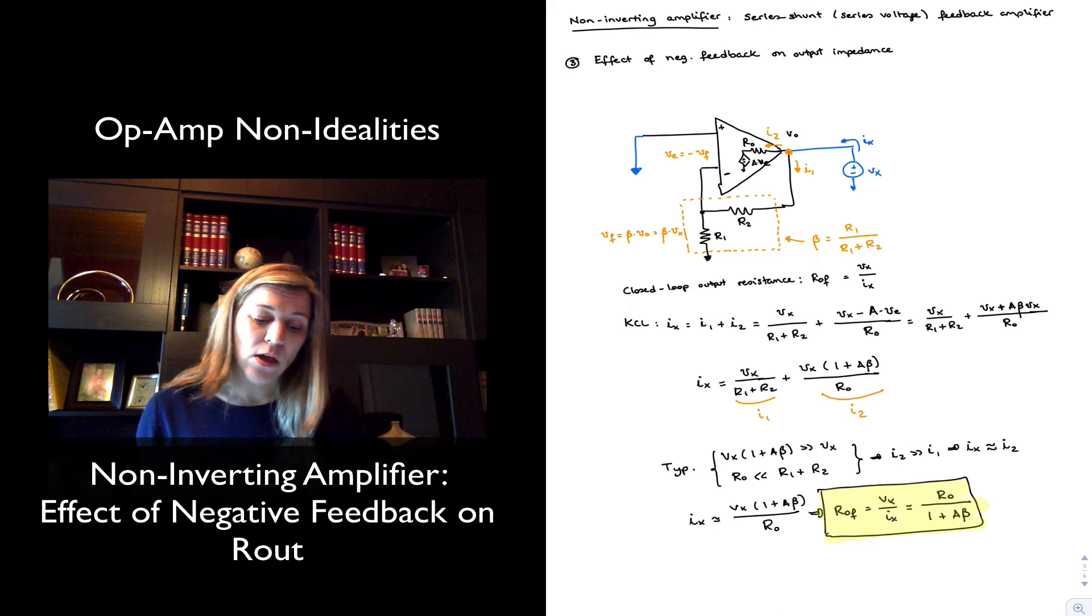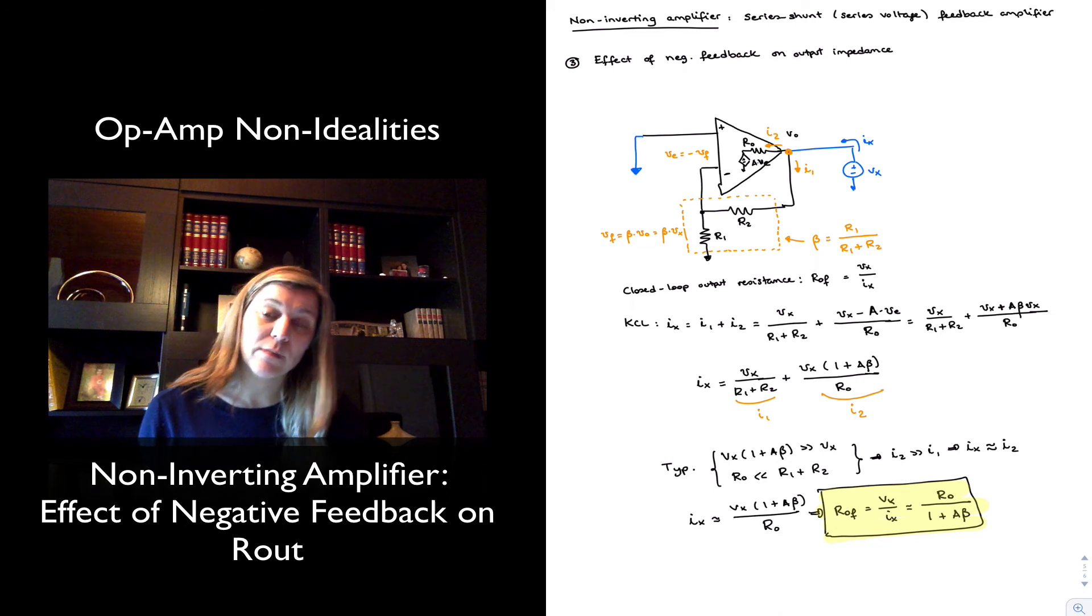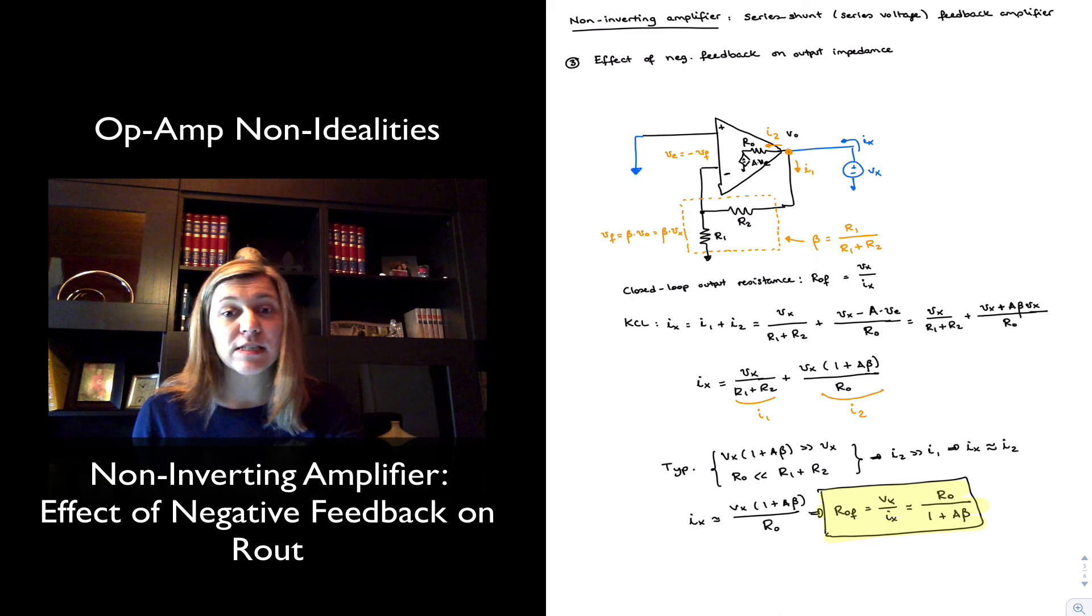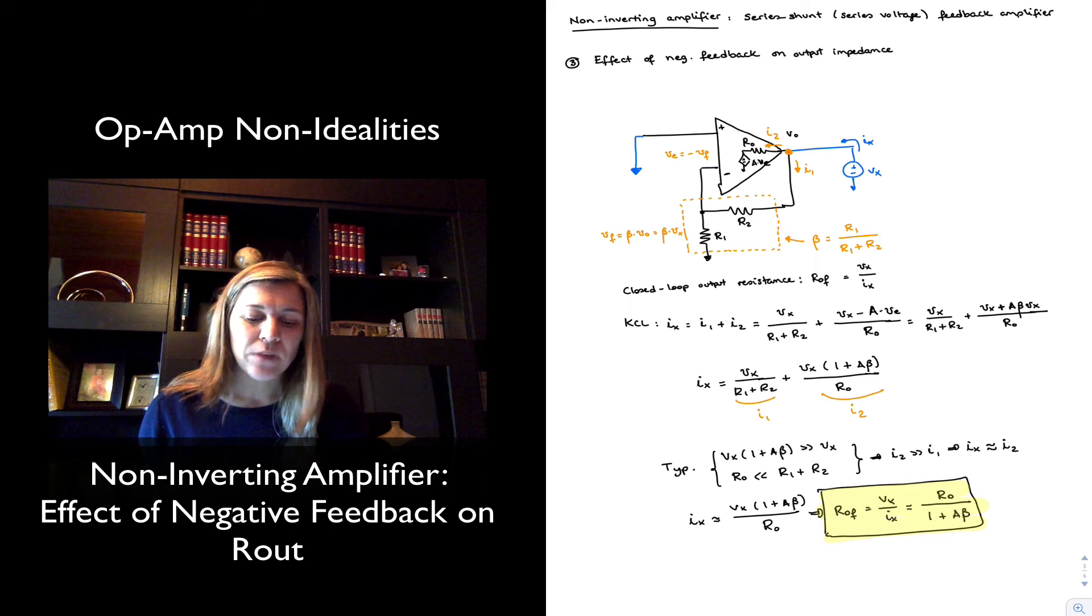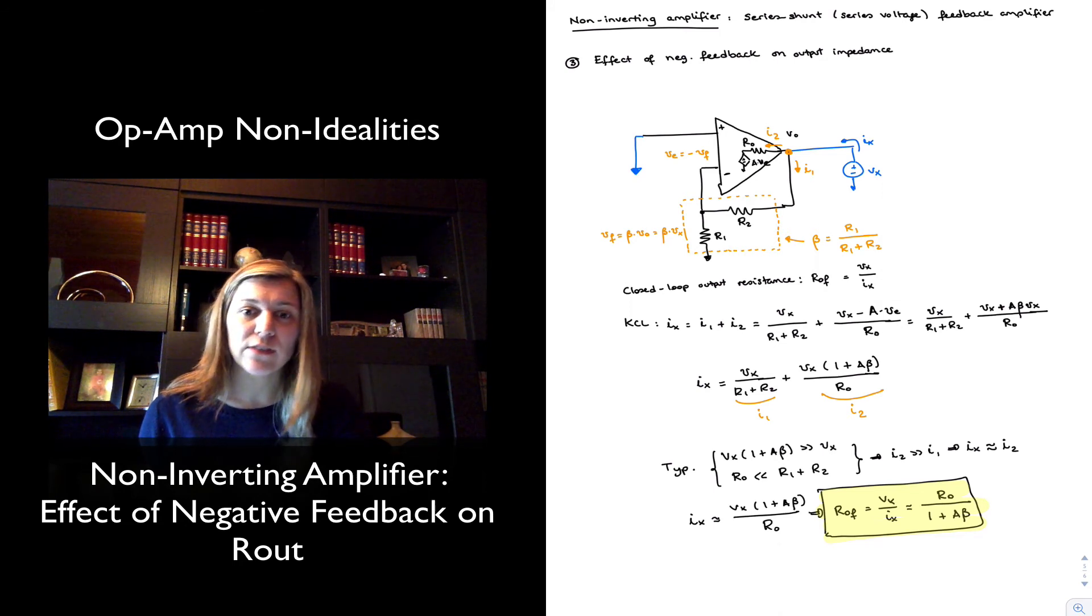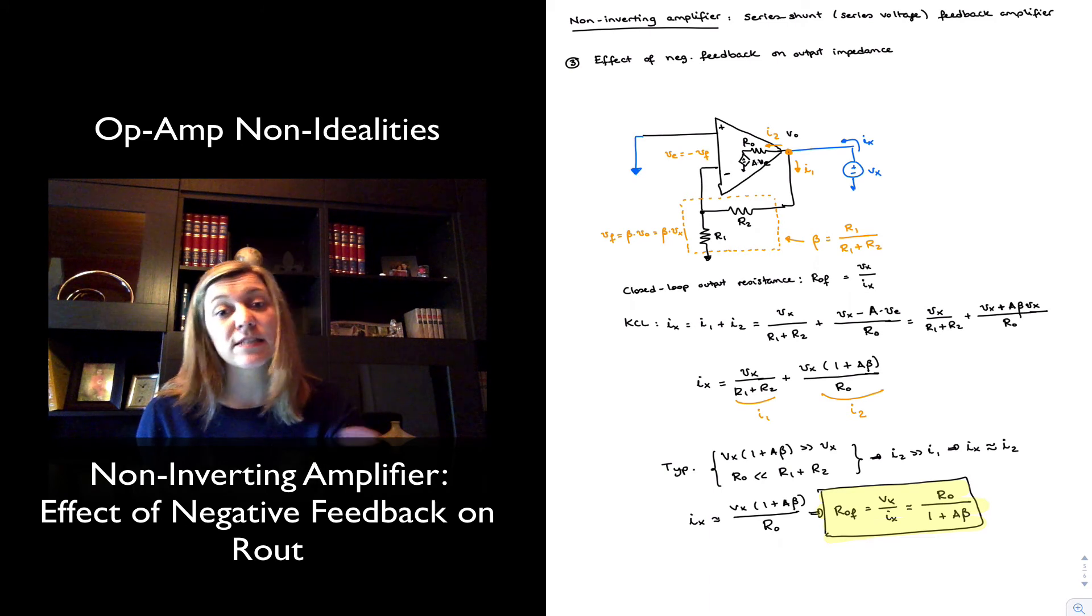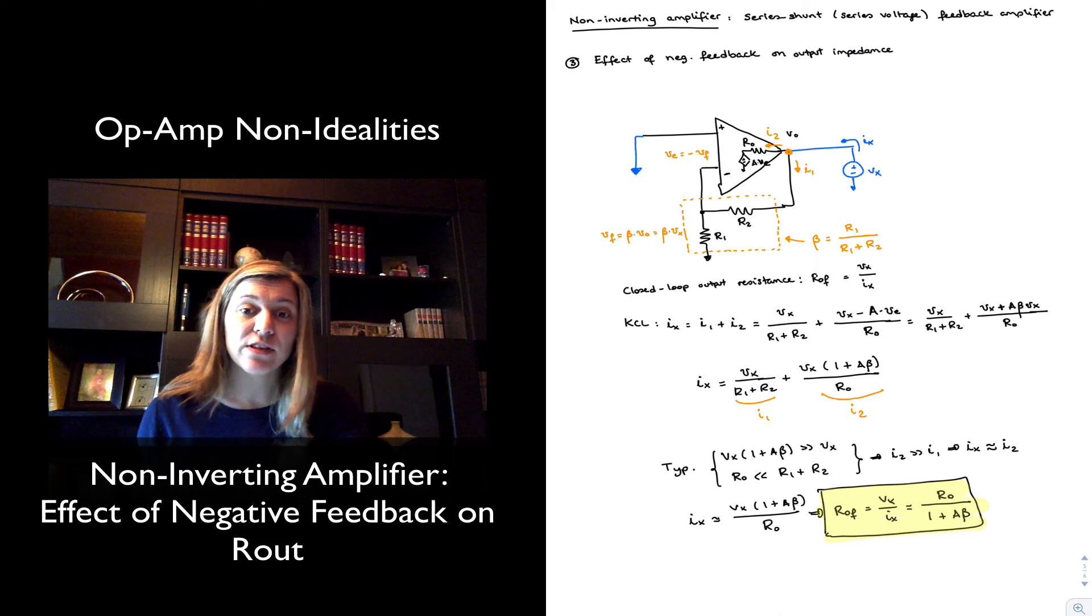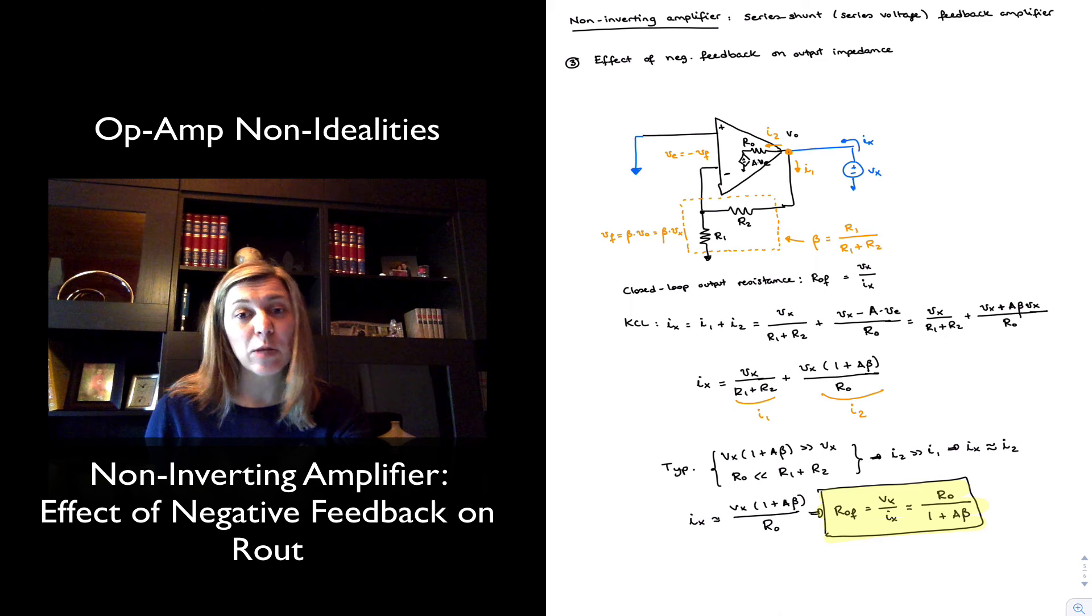And so, for example, in this case, we have series shunt feedback. So we have series at the input and shunt at the output. And so the input resistance gets increased by the amount equal to the loop gain. The output resistance gets decreased by an amount equal to the loop gain. If we have, for example, shunt shunt, we should expect that the input resistance gets reduced and the output resistance gets reduced because they both have a shunt connection. If we have a series series, then they will both be increased. But we can see that negative feedback always helps the characteristics of a particular type of amplifier.